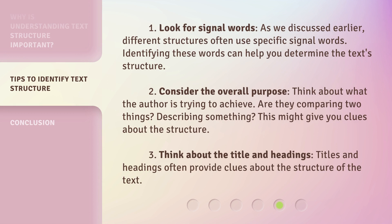1. Look for signal words: As we discussed earlier, different structures often use specific signal words. Identifying these words can help you determine the text structure. 2. Consider the overall purpose: Think about what the author is trying to achieve. Are they comparing two things? Describing something? This might give you clues about the structure. 3. Think about the title and headings: Titles and headings often provide clues about the structure of the text.